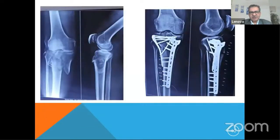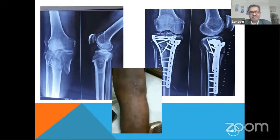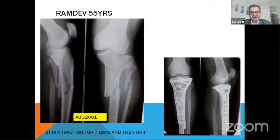In this patient with a large fragment, put a large plate on the medial side where the large fragment is and a smaller plate on the lateral side. This was in August 2011, when we gave skin traction for seven days and then operated.